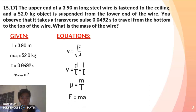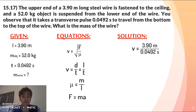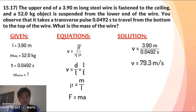The linear density mu equals mass over length, and force equals mass times acceleration. To solve, we first find our velocity: velocity equals 3.90 meters divided by 0.0492 seconds, which gives us 79.3 meters per second.